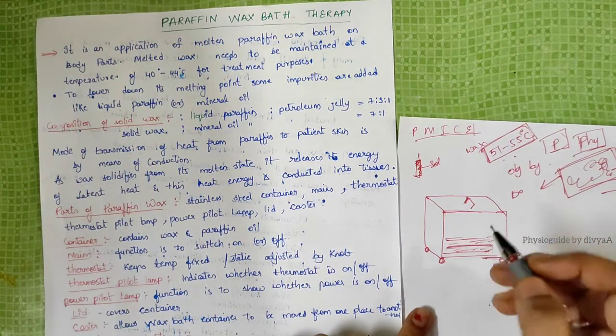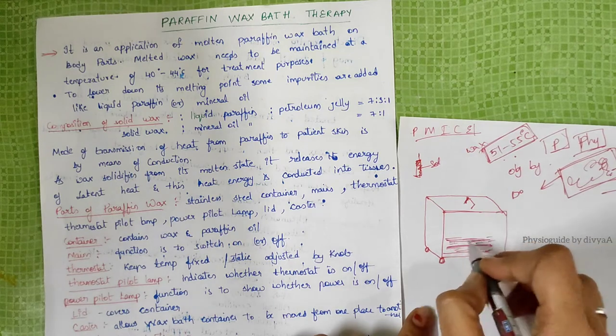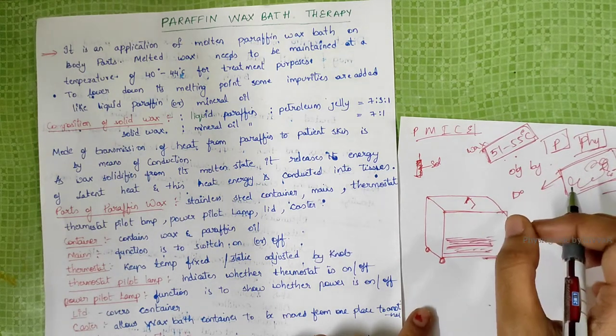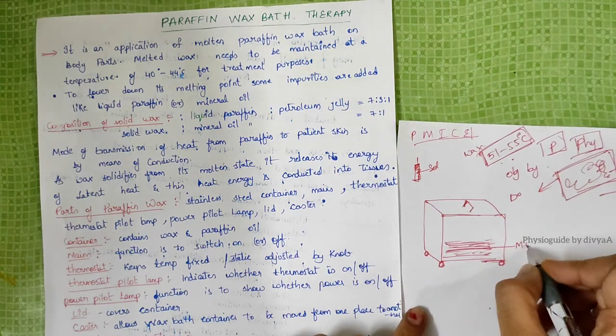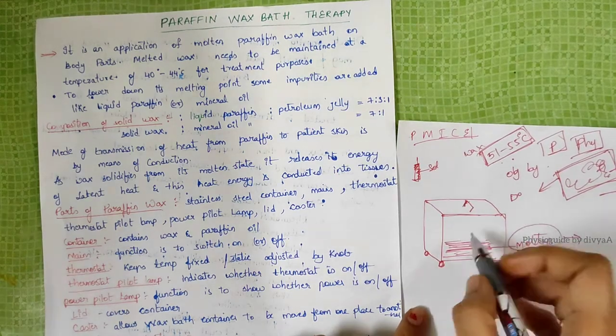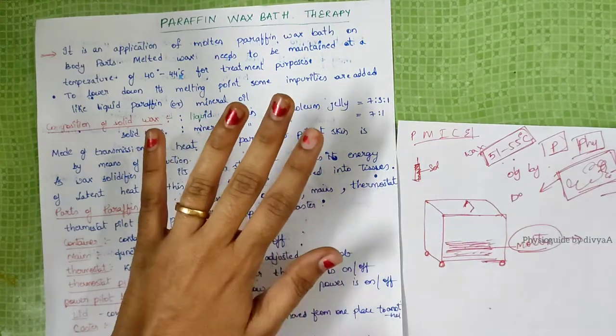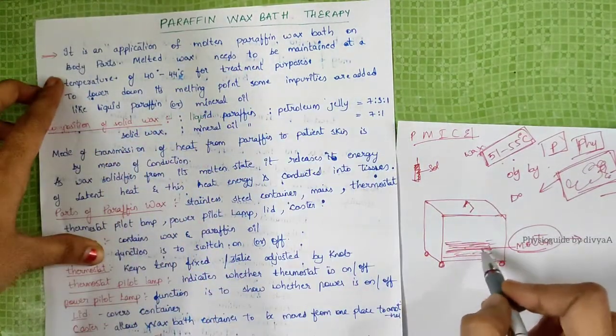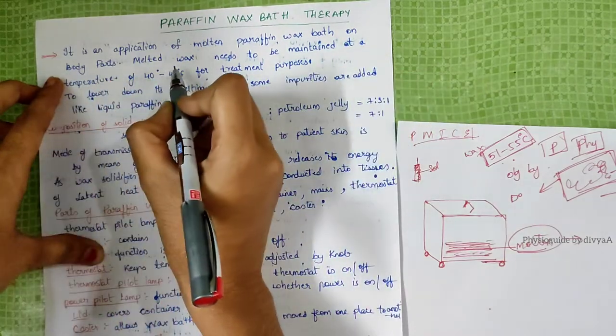The solid wax will be heated and it will come into liquid form, which is called molten form, and this liquid form is applied to the patient for treatment purposes.